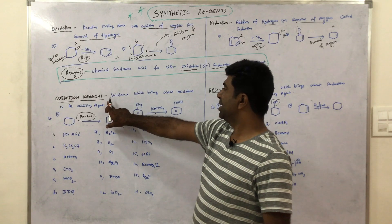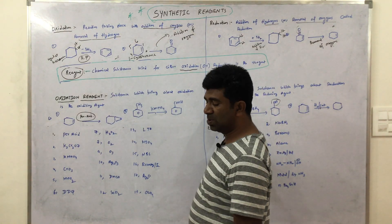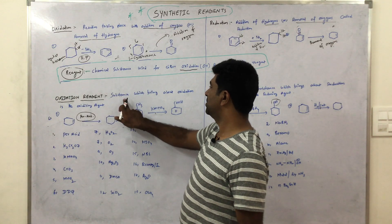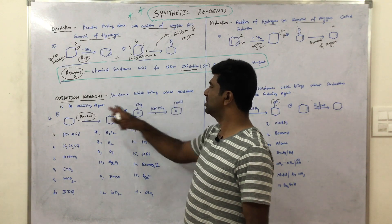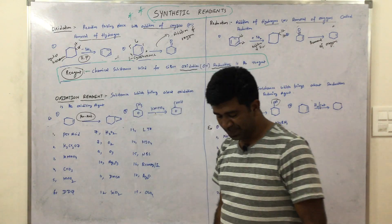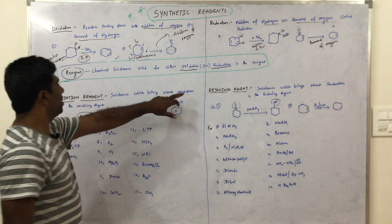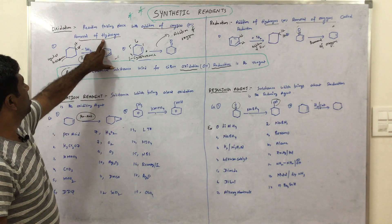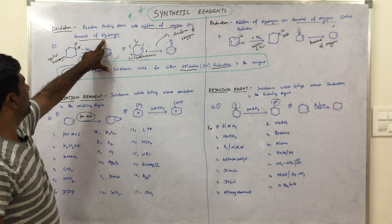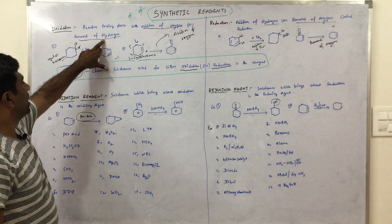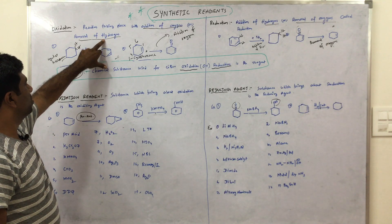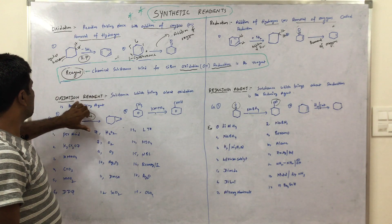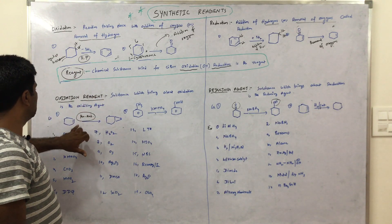Oxidizing reagents and reducing reagents — these two terminologies are very important. An oxidizing agent is a substance which brings about oxidation. Oxidation means addition of oxygen or removal of hydrogen, and the compound that drives this process is called the oxidizing reagent.